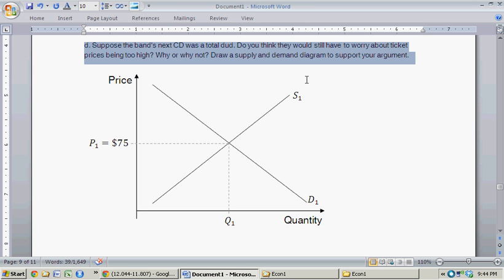Moving on to part D. Suppose the band's next CD was a total dud. Do you think they would still have to worry about ticket prices being too high? Why or why not? Draw a supply and demand diagram to support your argument. So I think the logic that they're hinting at here is if their next album's a dud,